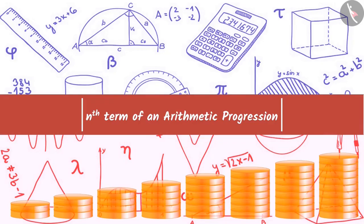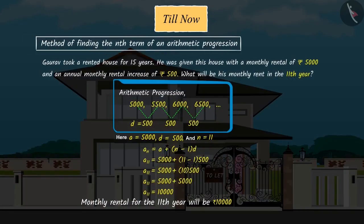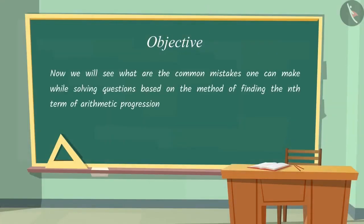In the previous video, we saw certain examples based on finding the nth term of an AP. Now, we will see what are the common mistakes one can make while solving questions based on this method.